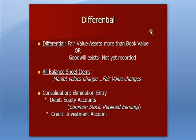I want to repeat the definition of the differential when talking about consolidating parents and subsidiaries. A differential exists if one of two things occurs: either the fair value of the assets is more than book value, or there's goodwill that exists that hasn't been recorded yet, which will be a new asset on the books. All balance sheet items may have a market value that changes — vehicles, buildings, investment securities — and liabilities like bonds payable can also change in market value, so their fair value changes.